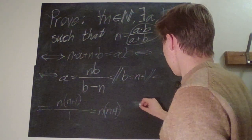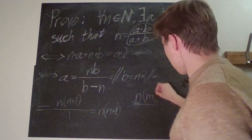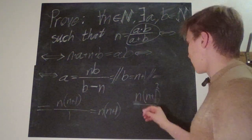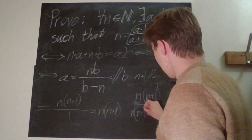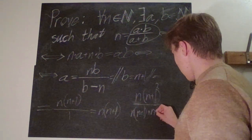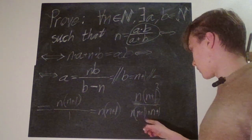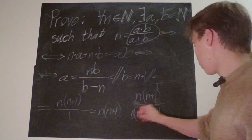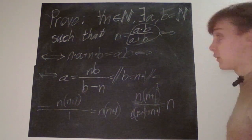That should be just n times n plus one squared. And then in the denominator we have n times n plus one plus n plus one. Here we can factor out the n plus one, so we just get n plus one squared in the denominator. And then those two cancel out, so we just get an n left and everything works out.